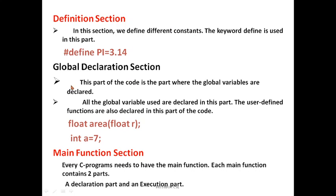Then global declaration. Remember, the link section supports header files, and the header file has two types of functions: library or predefined functions, and user-defined functions. Predefined functions include printf and scanf. For example, if you are developing a program and instead of printf you write something else, it will give a link error. Global declaration is the part where all global variables used are declared, and user-defined functions are also declared here.